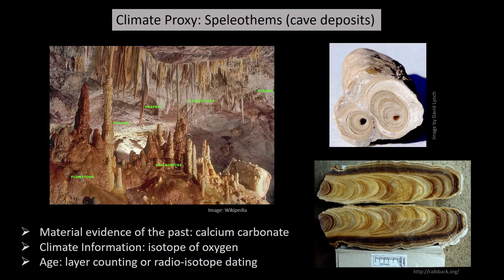Another proxy is speleothems, which are cave deposits. One picture shows a transverse section and another shows a longitudinal section of a speleothem, and you can clearly see the growth rings. The material evidence is calcium carbonate, and the isotopic ratio of oxygen in the CaCO3 gives information about past climate. We can assign a calendar year to individual rings by either layer counting or radioisotope dating.